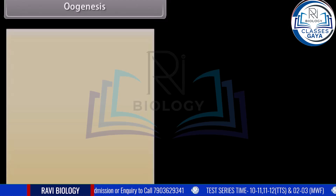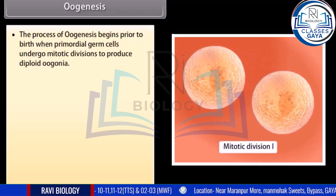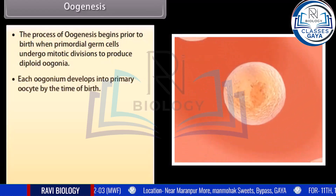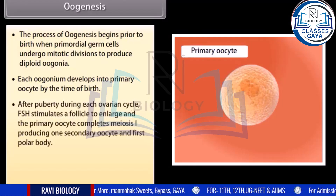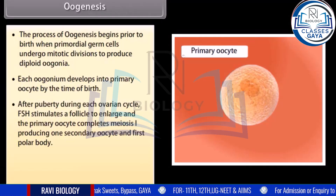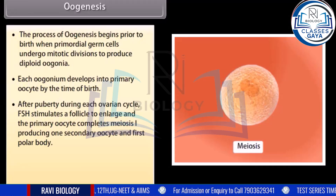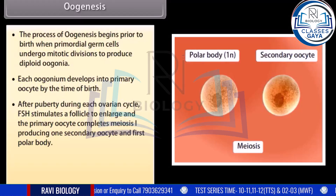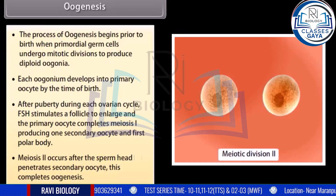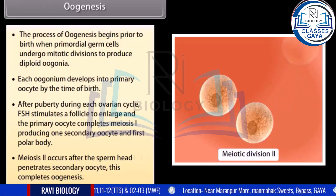Oogenesis begins prior to birth when primordial germ cells undergo mitotic divisions to produce diploid oogonia. Each oogonium develops into a primary oocyte by the time of birth. After puberty, during each ovarian cycle, FSH stimulates a follicle to enlarge and the primary oocyte completes meiosis I, producing one secondary oocyte and a first polar body. Meiosis II occurs after the sperm head penetrates the secondary oocyte, completing oogenesis.